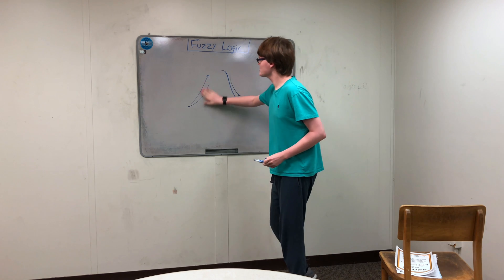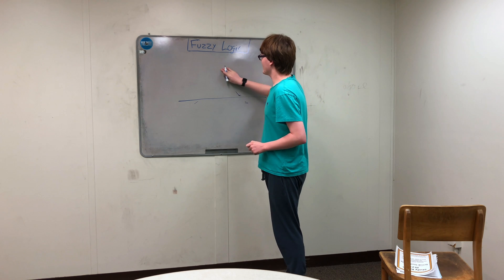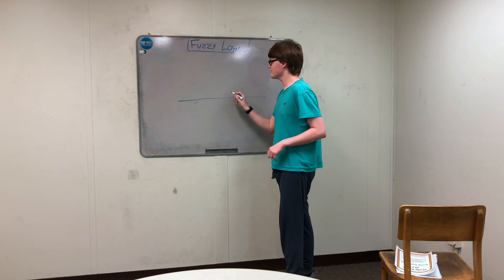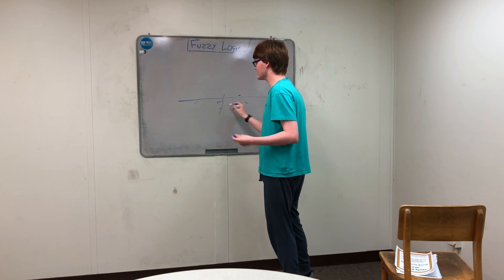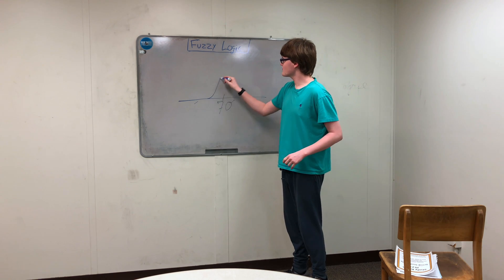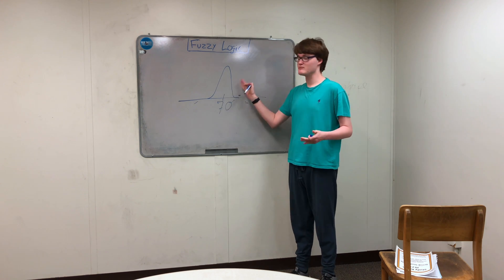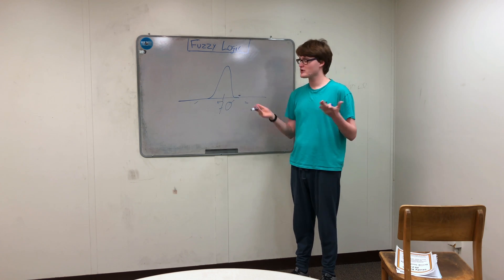So the way fuzzy logic handles this is that we create our little line here. And we have a bunch of different areas on here. So our first value would be, say, our target speed, which is 70 miles per hour. And so in this case, we're going to use a Gaussian function, which is just a fancy word for a very smooth curve because it fits a little better than a triangle in this case.